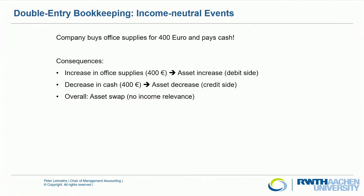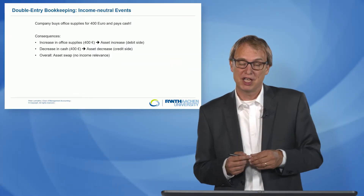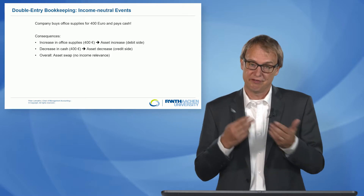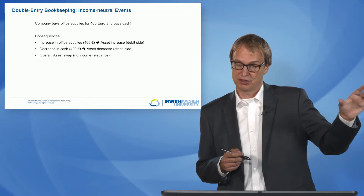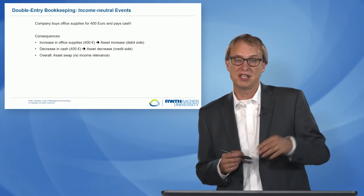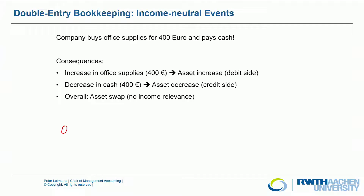We start with a book record where a company buys office supplies for 400 euro and pays in cash. When we look at the consequences of this financial event, we first see we have an increase in office supplies — we have more office supplies than before, valued at 400 euro. This is an increase in an asset, because office supplies are recorded on the left side of the balance sheet.